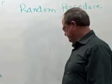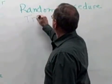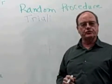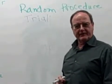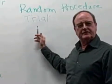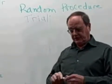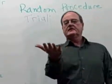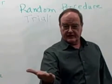The next term we're going to discuss is 'trial.' A trial in probability is simply one instance of performing the action of a random procedure. So to clarify that, back to my die — one trial would be simply the rolling of the die.